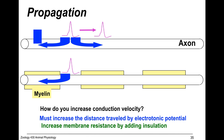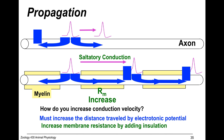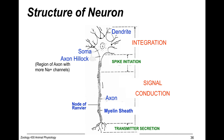We can increase membrane resistance by adding insulation, making the whole thing go faster. When we wrap axons with Schwann cells creating a myelin sheath, it increases membrane resistance and causes the action potential to travel farther before it reaches a patch of naked membrane where it can initiate another action potential. This is called saltatory conduction — it goes in jumps, basically jumping down the axon and re-initializing at these internodes.